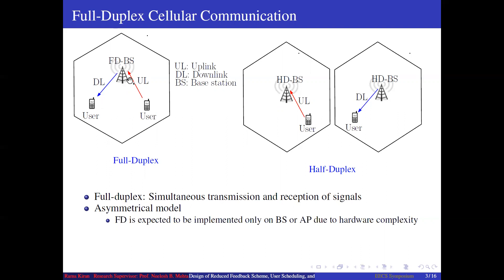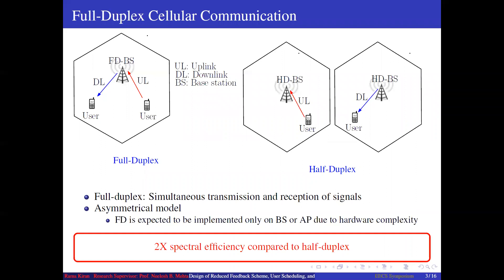Here we have an asymmetric full duplex cellular system with a full duplex capable base station and half duplex users. The base station can receive signals from the uplink user while it is transmitting to another downlink user. This is in contrast to half duplex, where either uplink or downlink communication happens at a time, but not both simultaneously. The simultaneous uplink and downlink can double the spectral efficiency of the cellular system compared to half duplex.